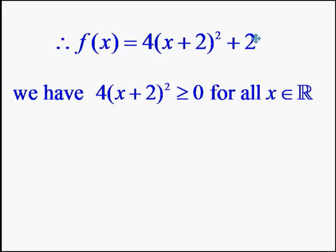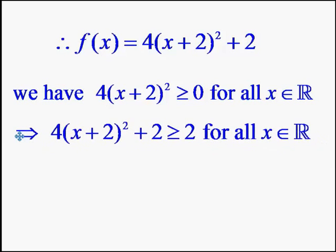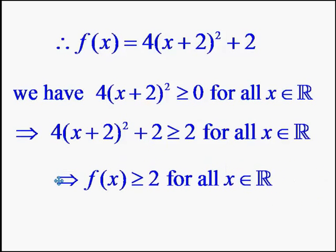Adding 2 to both sides of this inequality, we get 4 times (x + 2)² + 2 is greater than or equal to 0 + 2, which gives us 2. If we observe, the left-hand side quantity is nothing but f(x). That is the reason we are adding 2 to both sides — so that we get f(x) on the LHS. So the inequality becomes f(x) ≥ 2 for all x belonging to R.